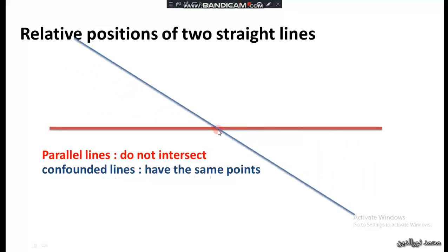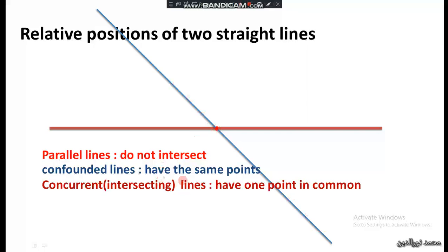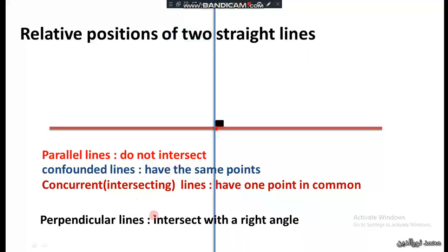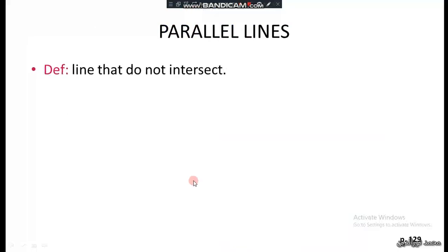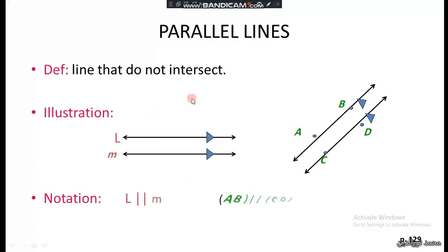In this case, we say that the two lines are concurrent or intersecting. When they are intersecting with a right angle, then we call them perpendicular lines. The definition of parallel lines is that they do not intersect.